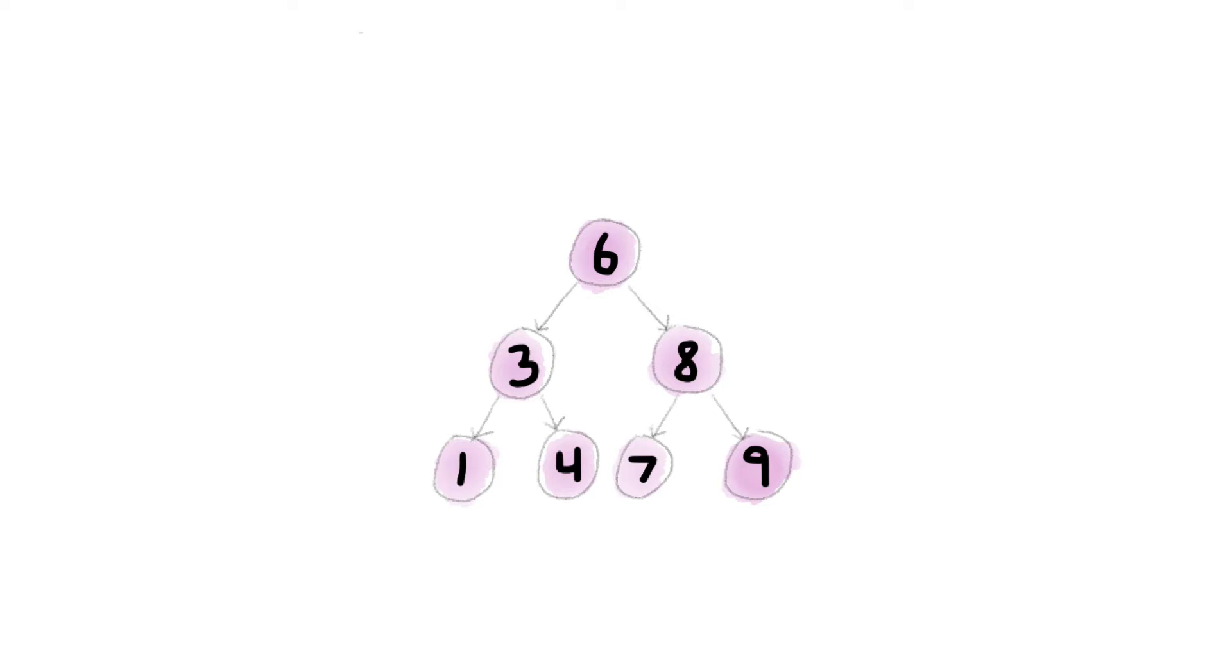So how would you search in this binary search tree? Suppose you're trying to find a user with four clicks. Search is nearly identical to insertion. The difference is, first you ask, is this it?